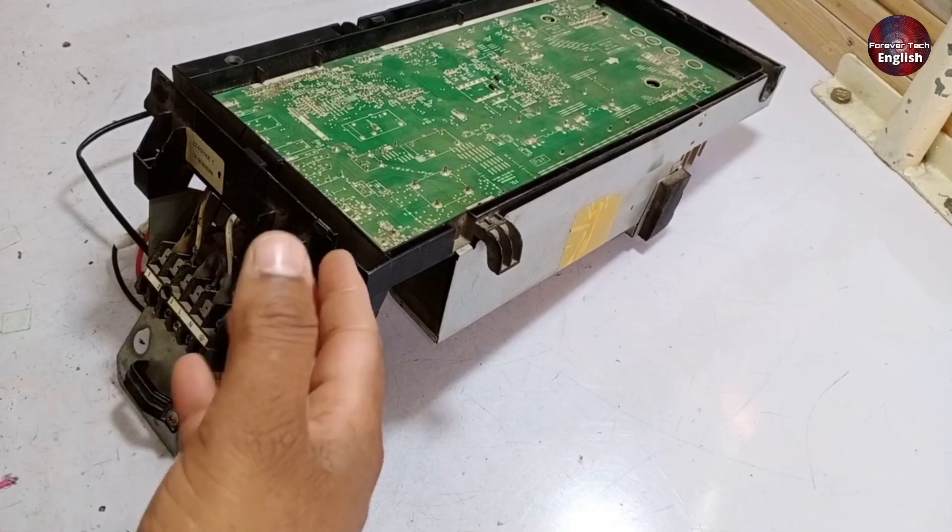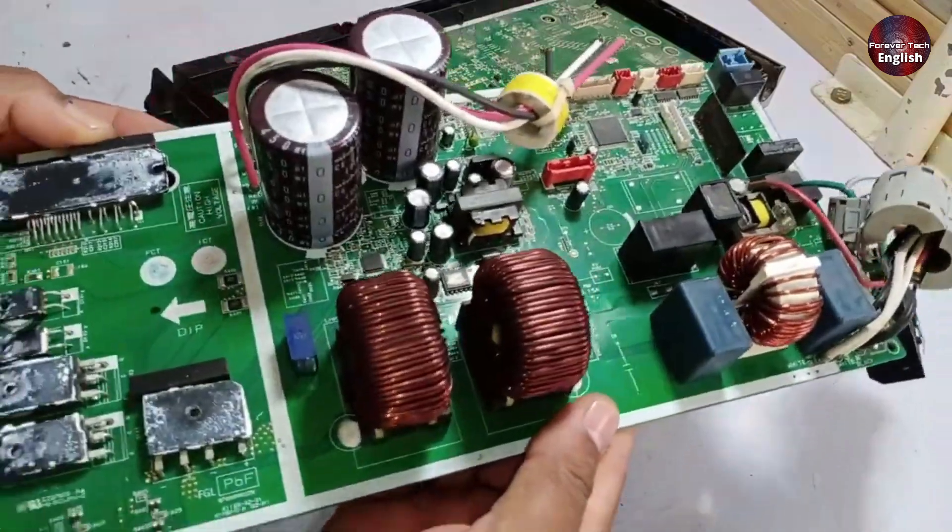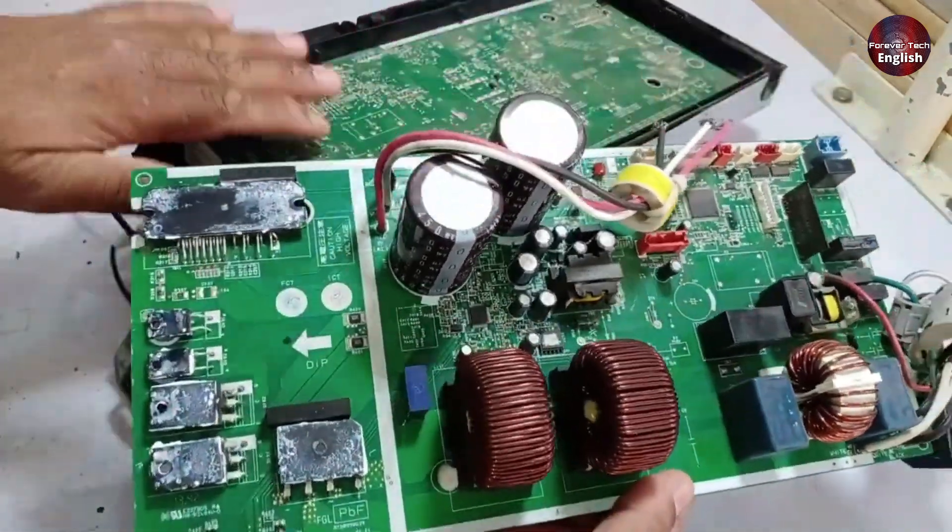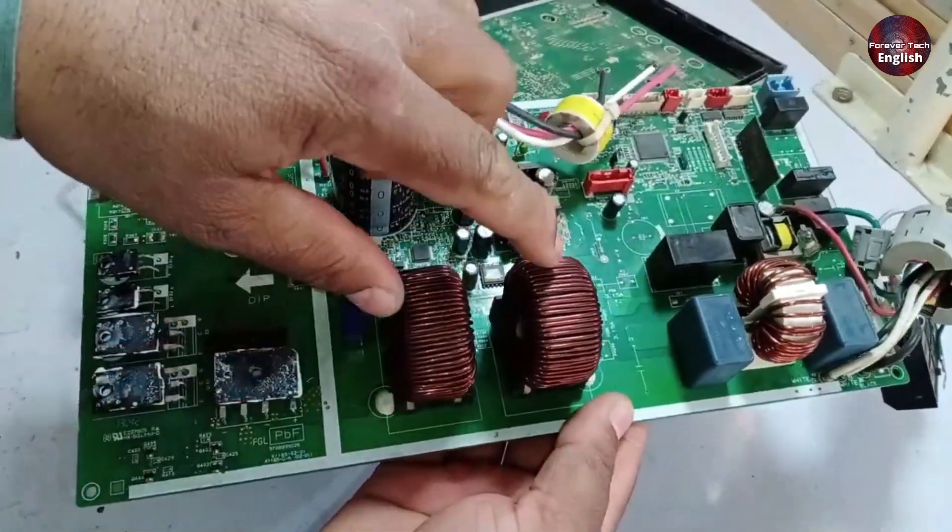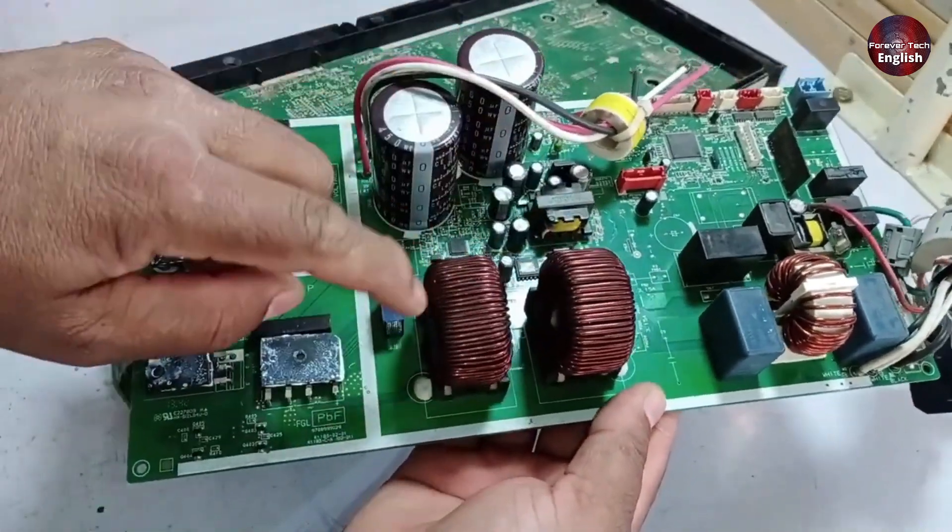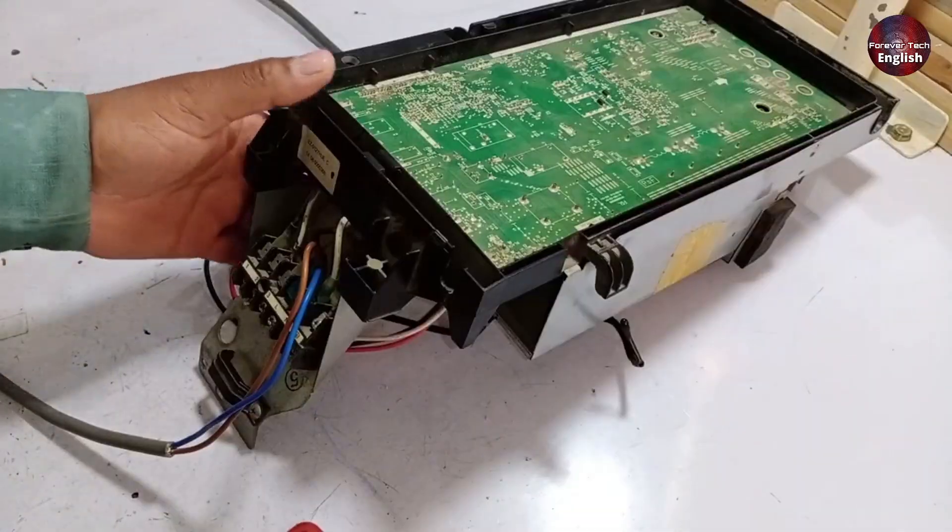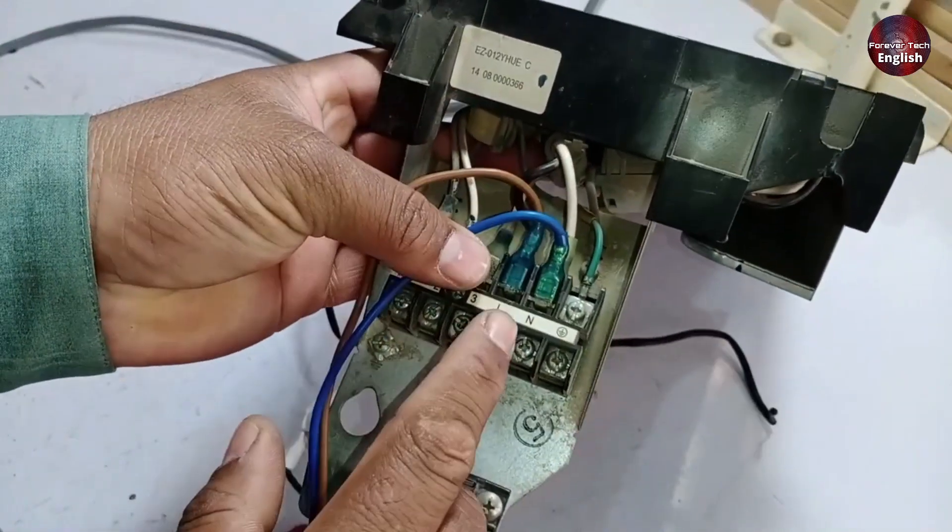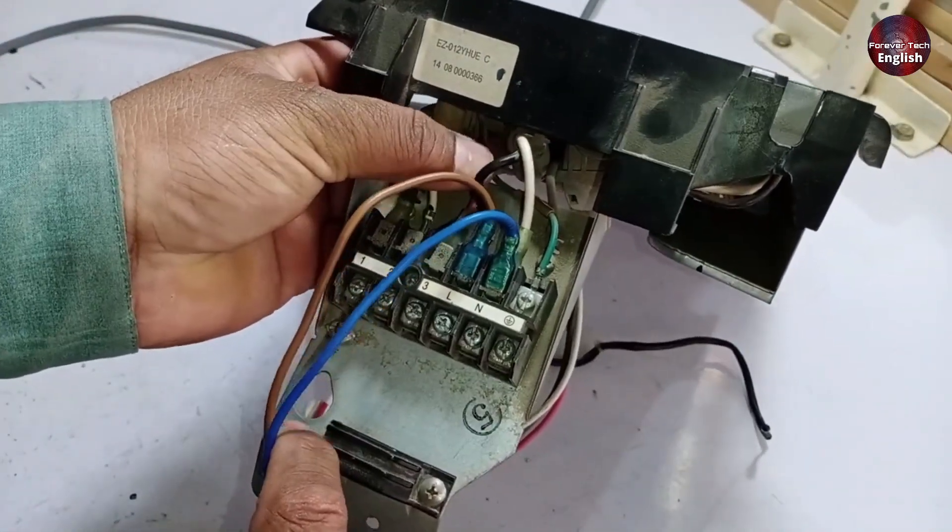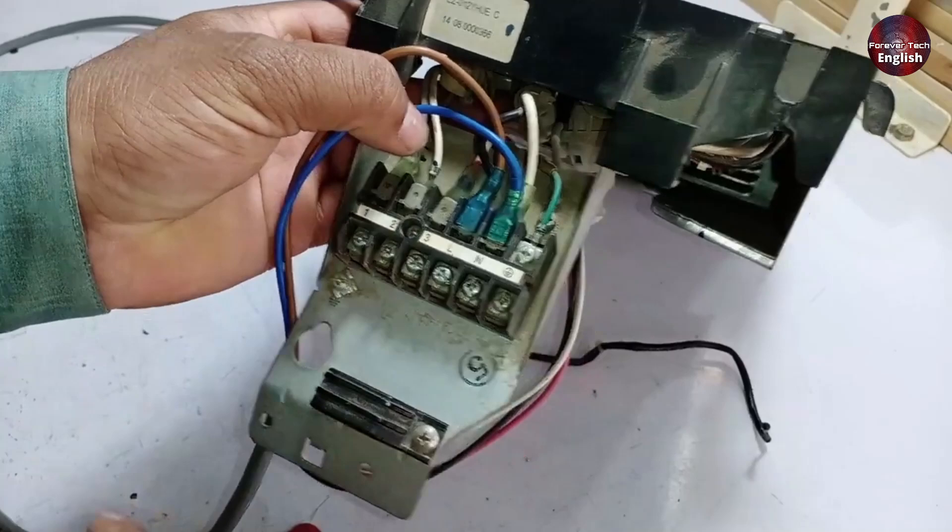Now we will provide electricity to this PCB and show you the problem. Let me clarify that both these boards are the same. The reactors in these PCBs are internally embedded. They don't have the external reactor that usually comes with them. Now I will supply power. Always ensure there are no mistakes in the wiring. Here, the white wire is neutral, the black wire is for line, and the third wire is for communication.